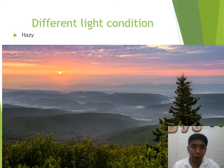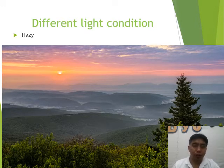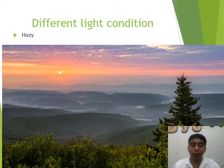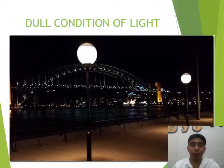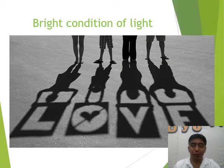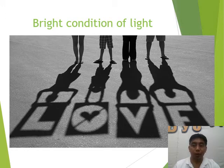The first condition is called hazy, defined as a condition of light with transparent shadows. Our basis for determining the condition of light is simply to look at the shadow. If the shadow is transparent, that is what we call hazy. The second condition is dull — during nighttime there is no shadow, so when there is no shadow, it is dull. The third condition is bright — when there is a strong shadow, that is bright.